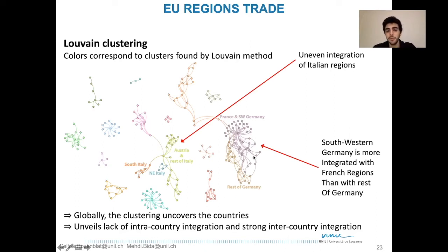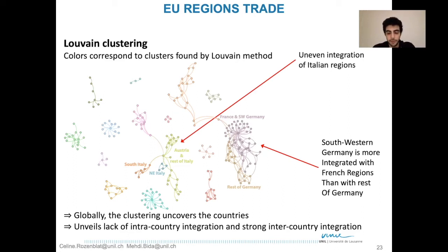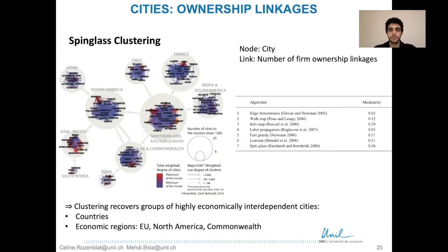Similarly for Germany, it is not one coherent part either. Southwestern Germany is more connected to France than to the rest of Germany. This clustering method revealed some unexpected patterns — at least patterns not revealed by administrative boundaries.